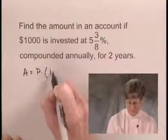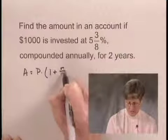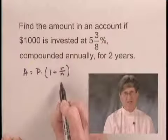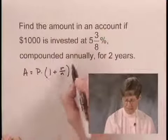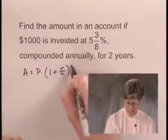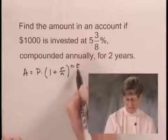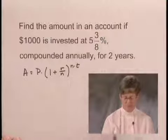times 1 plus R over N, where R is the interest rate and N is the number of compounding periods annually. And that's raised to the power N times T, where this is the same N as this, and T is the time of the investment.